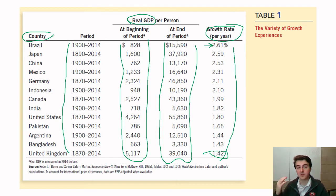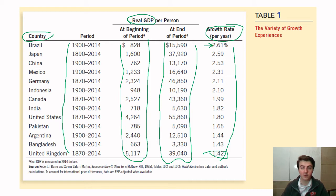Our incomes are going up over time, and this is something that we as a society should encourage. We want people to make more money — this is a good thing. We want wealthy, healthy people. A higher GDP is generally correlated with wonderful things like education and healthcare. So we want a high-income country.